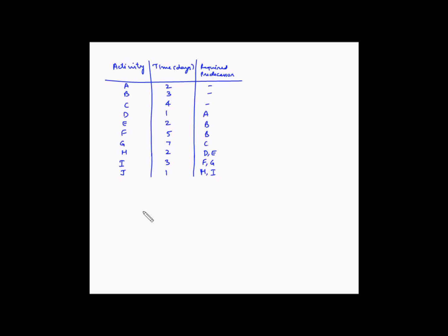Now let's draw the network diagram. The first three activities, A, B, and C, do not require any predecessor — no other activities need to be completed before they start — so they become the starting activities of the project. We'll draw the start node and number it as one, and from this we'll draw three arrows representing A, B, and C.